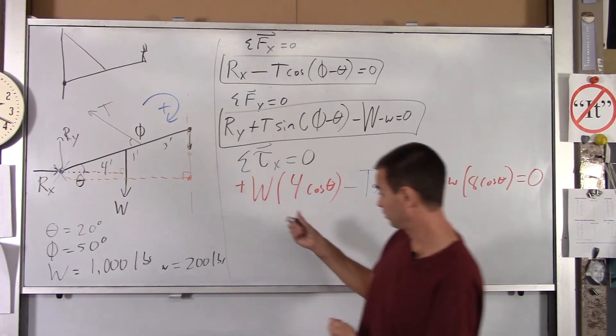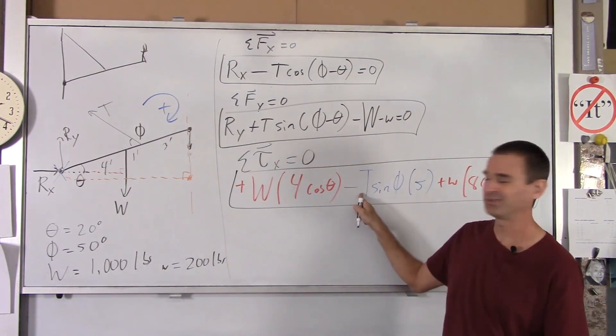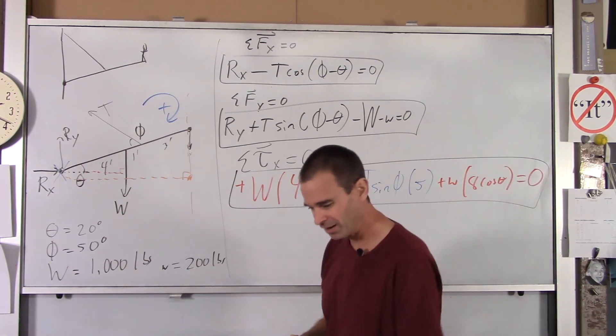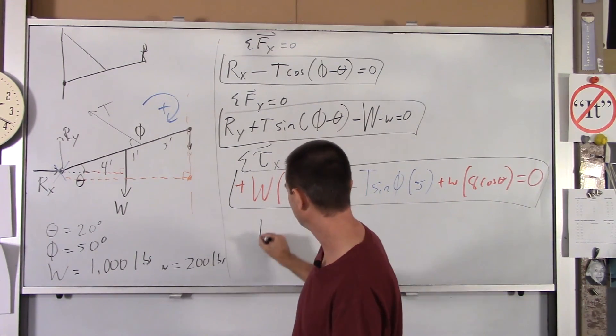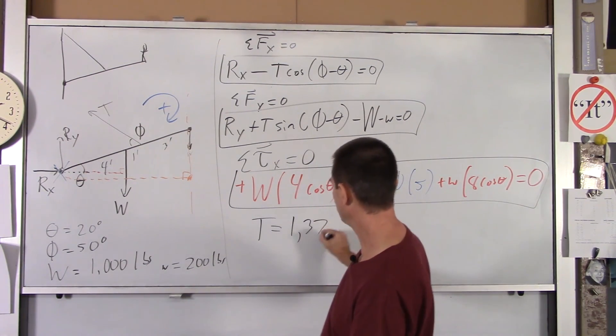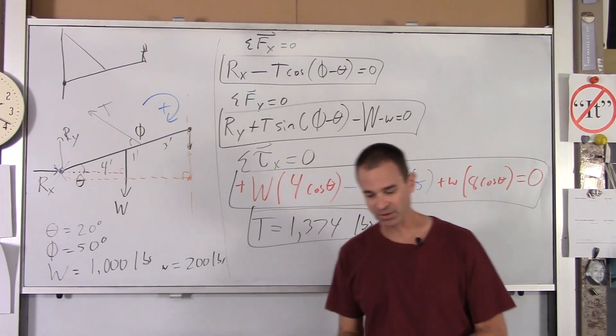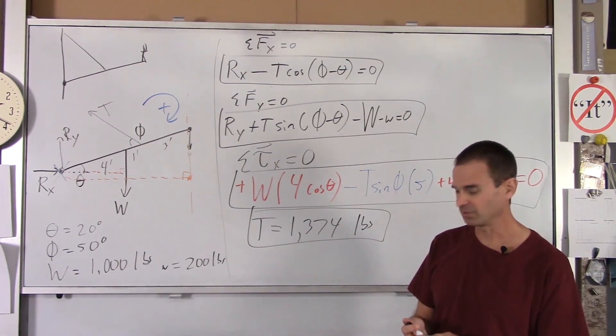If you'll notice in this third equation we got, the only unknown is your tension. So now you can just plug and chug and solve. When I did that, here's what I got for my tension. I got 1374 pounds. So those chains got to hold quite a bit of force or quite a bit of tension.